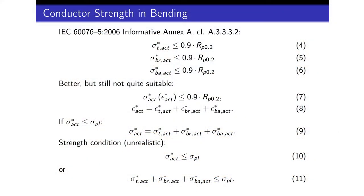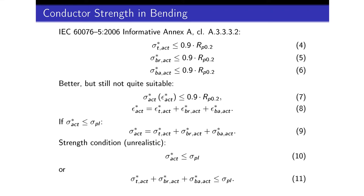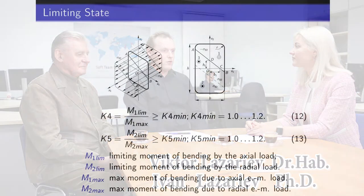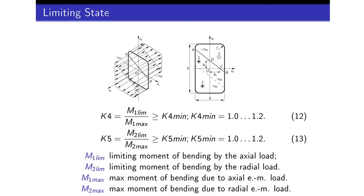The criteria of conductor strength in bending are totally different from those in the informative Annex A because the latter are internally inconsistent. In this slide are shown the criteria — formulas 4 to 6 — and obviously the respective deformations occur simultaneously. Also, if one takes into account the deformations of initial bending that are plastic in nature, it becomes obvious that the windings fail the criteria in the informative Annex A even before any short circuit load is applied to them.